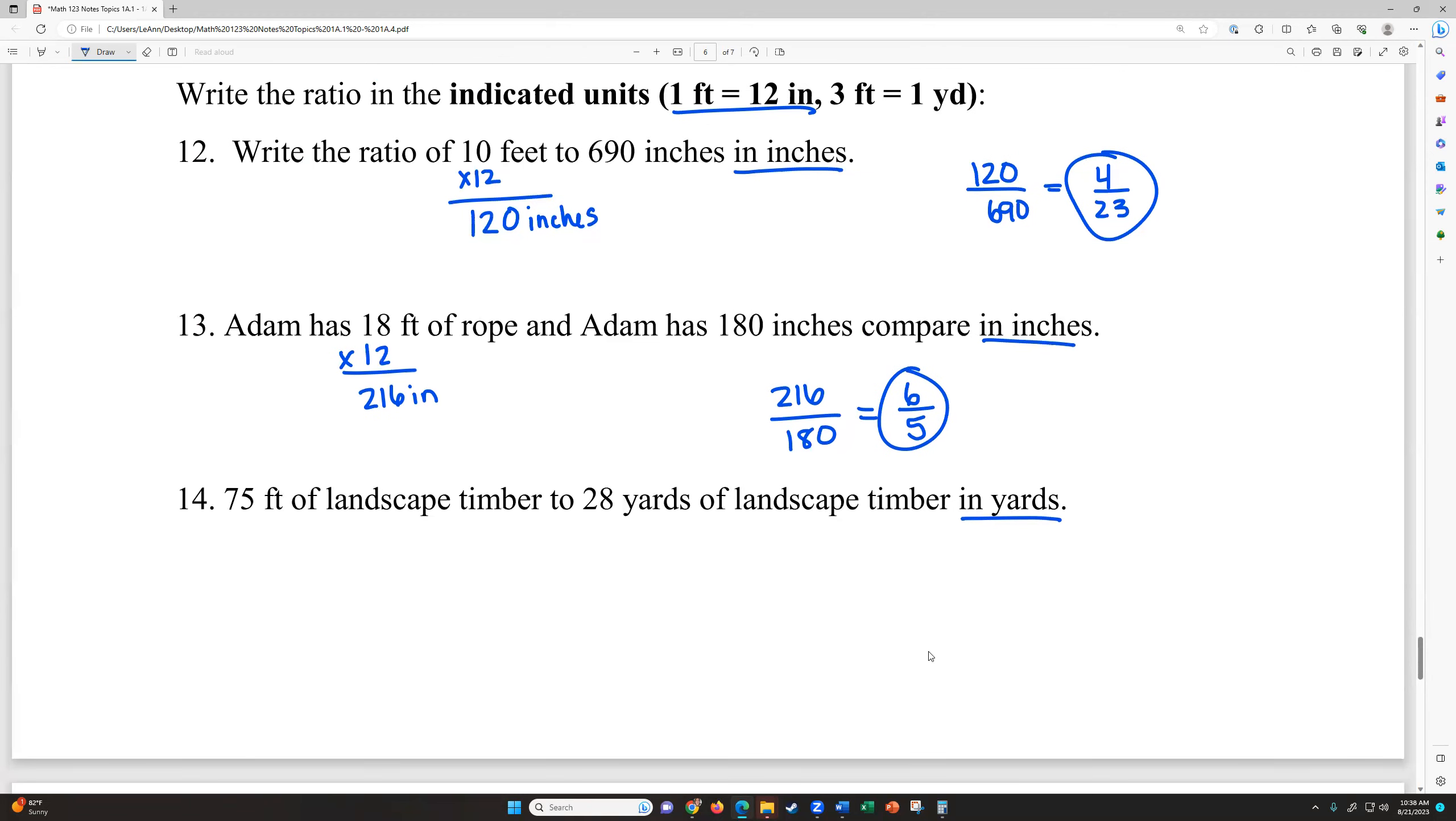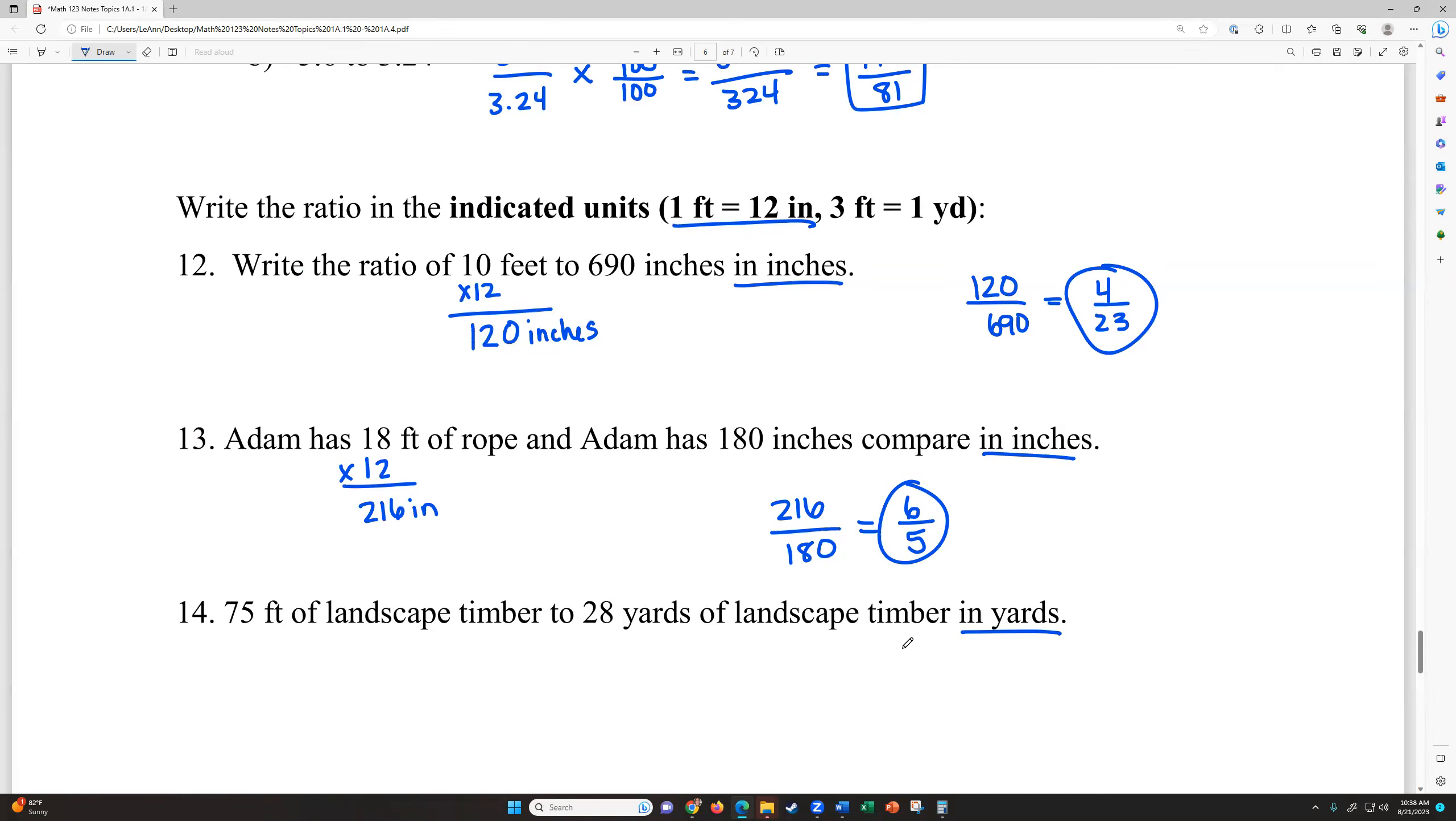And then 75 feet of landscape timber to 28 yards of landscape timber in yards. So this one's a little different because one yard is three feet. So if I'm putting these both in yards, this is a little different. We're not multiplying by three. One yard is three feet. So we need to divide by three. We need to know how many yards are in 75 feet. So we're going to divide 75 by three. And that gives me 25. I know that one just because three quarters is 75 cents. So this one's 25 yards. So in yards, this would be 25 over 28. And I believe that is already reduced. And one way you would know that is if you do the fraction button on your calculator, it gives you the same fraction back.